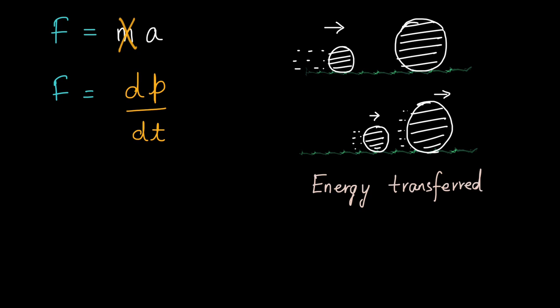We can also say that the smaller ball had a momentum of MV to begin with. And upon colliding or interacting with the bigger ball, let's say now it has a momentum of MV1. Now the velocity would be less than the original velocity. It has transferred some of its momentum to the ball.